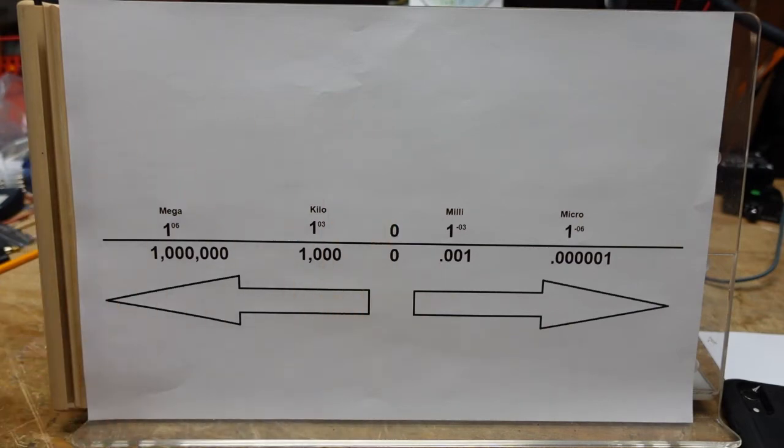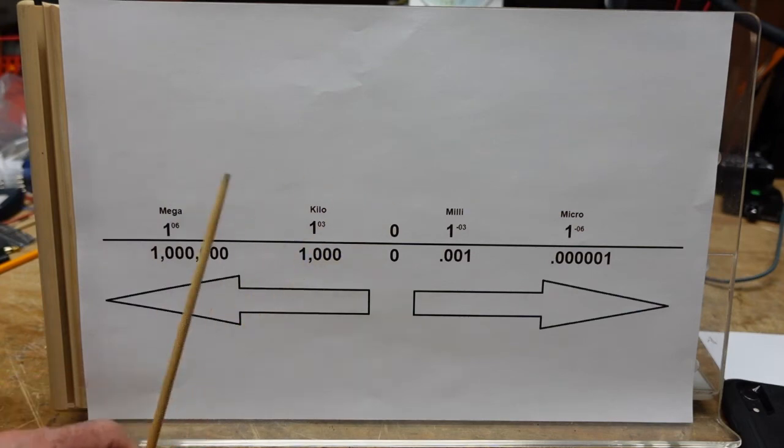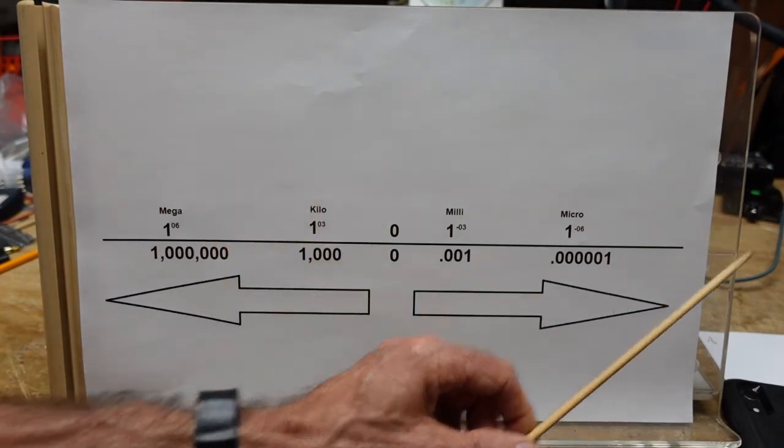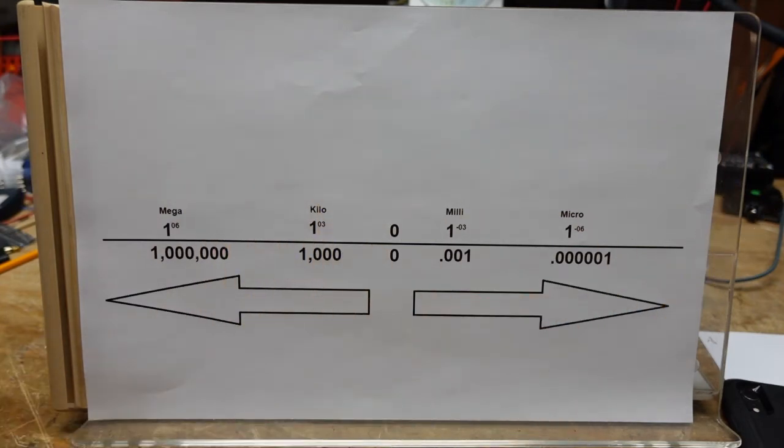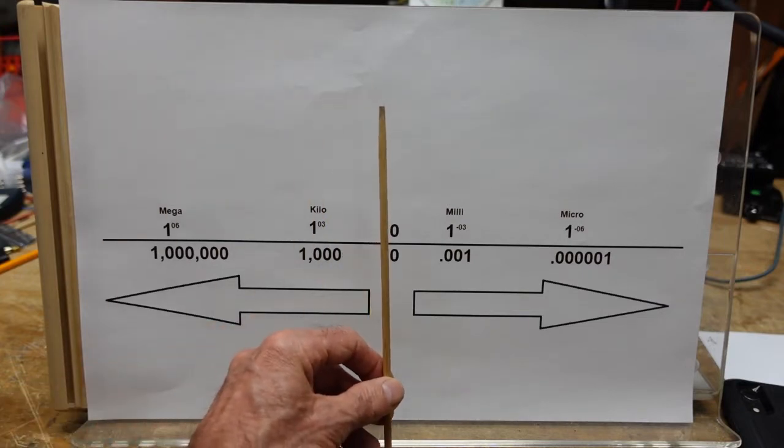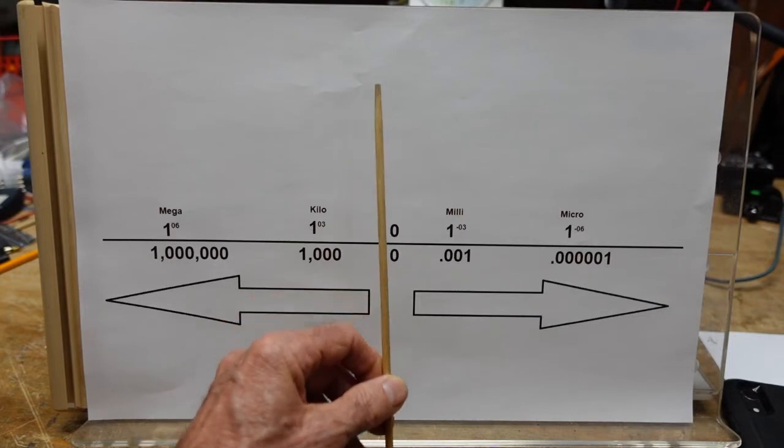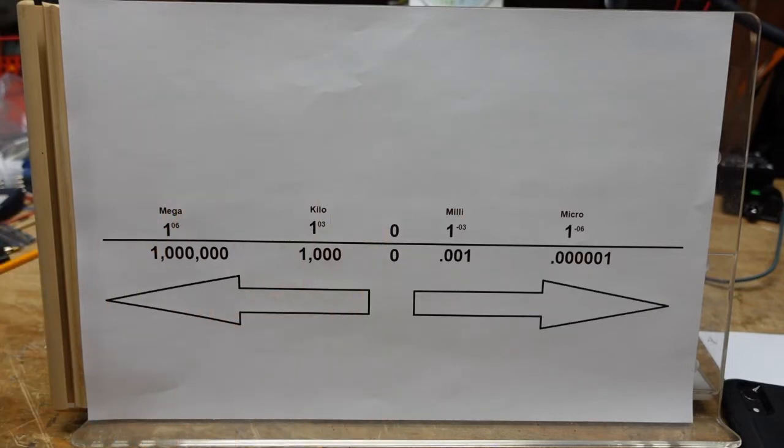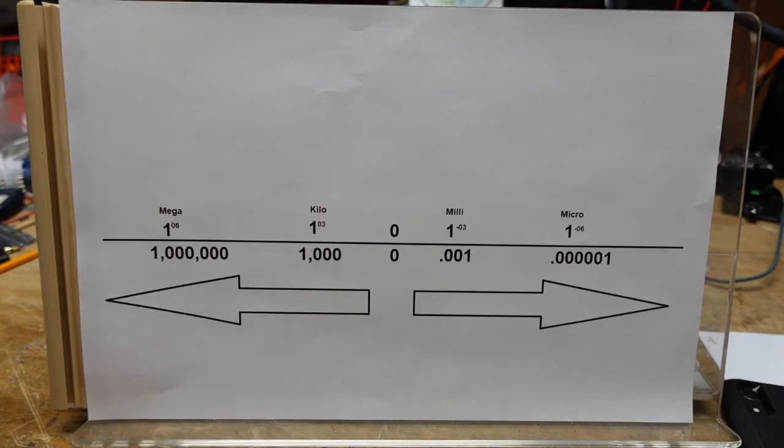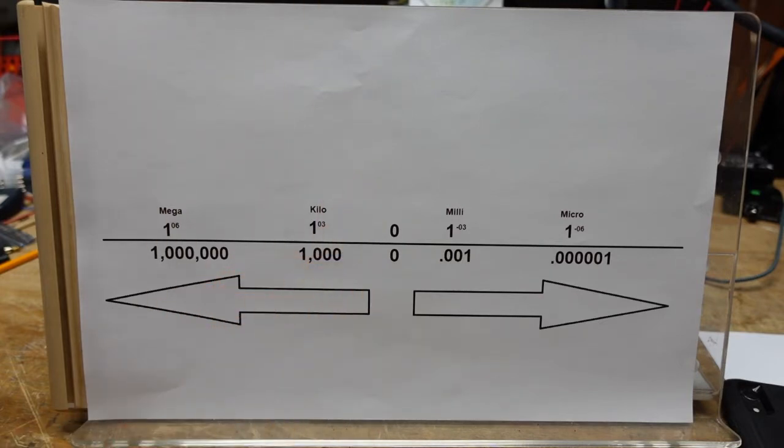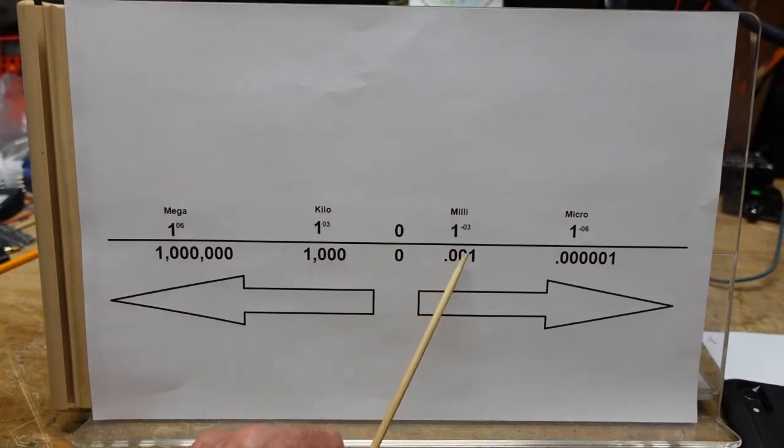These are pretty easy to understand. Some folks have a little problem when we start going to the other side of the decimal point. When we have one volt, one amp, one ohm we're fine. As soon as we drop below that we go into milli territory. So take one volt and drop one millivolt off of it, you're at 999 millivolts which would be 0.999.